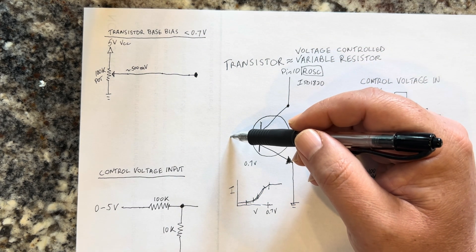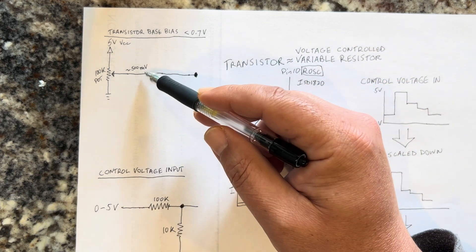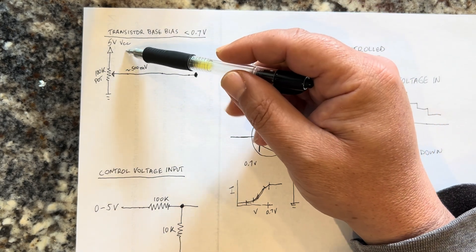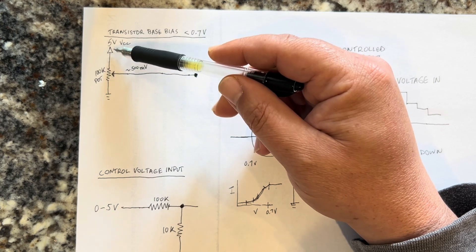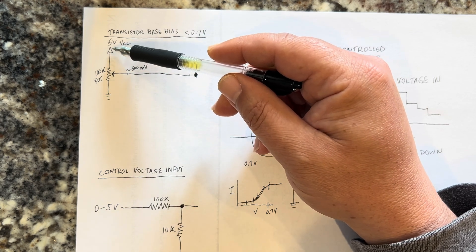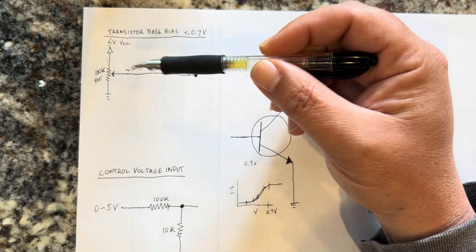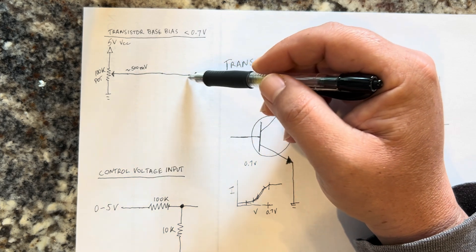You want to bias the voltage of the transistor to less than 0.7 volts. In my experience, if you bias it to about 500, 550, 510 millivolts, that is accomplished by a simple 100k potentiometer.